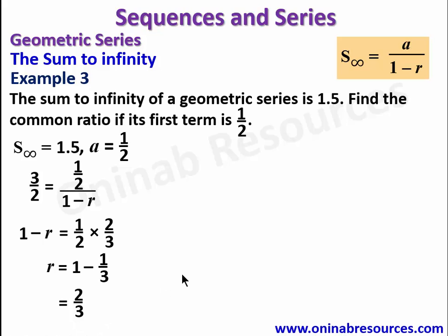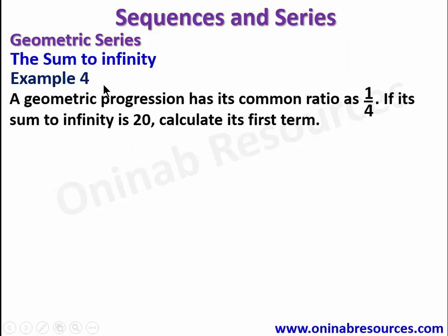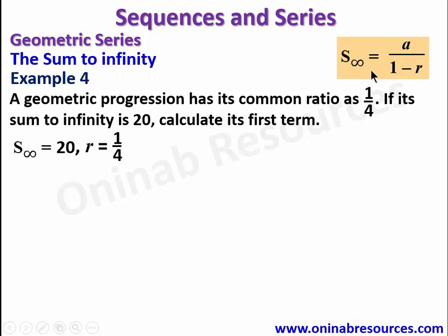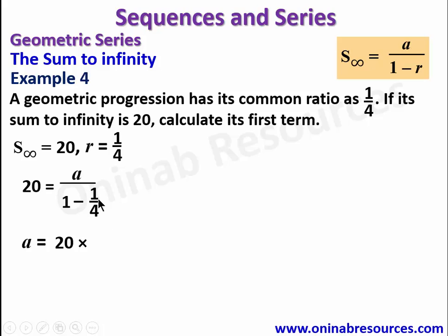Example 4: a geometric progression has its common ratio as 1/4. If its sum to infinity is 20, calculate its first term. We are given S∞ = 20 and r = 1/4. Using S∞ = a / (1 - r), we have 20 = a / (1 - 1/4) = a / (3/4). Making a the subject gives a = 20 × (3/4) = 60/4 = 15. The first term is 15.